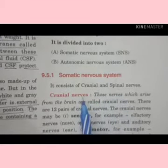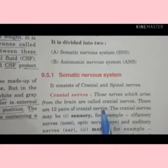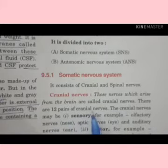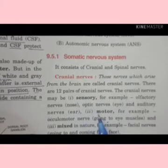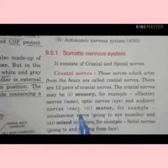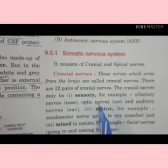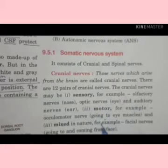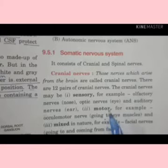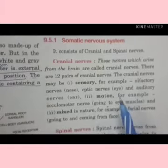The somatic nervous system consists of cranial nerves and spinal nerves. Cranial nerves are the nerves which arise from the brain, and there are 12 pairs of cranial nerves. These cranial nerves may be sensory, motor, or mixed. For example, the optic nerve — all nerves coming from the brain which connect your eye, ear, tongue — these are called cranial nerves, and they are 12 in number.